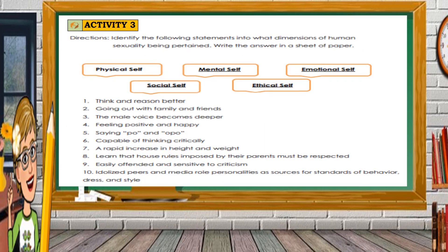For Activity 3, identify the following statements according to which dimension of human sexuality is being referred to. Write your answers on a sheet of paper, choosing from: physical self, mental self, emotional self, social self, and ethical self. Write the answer beside each number — for example, number 1 says 'think and reason better,' so write whichever dimension you think is the best answer.